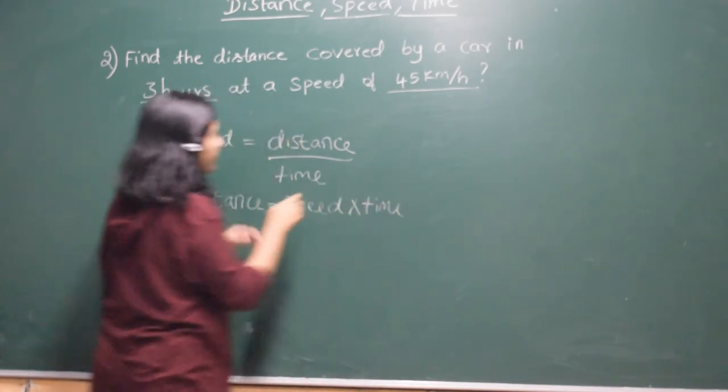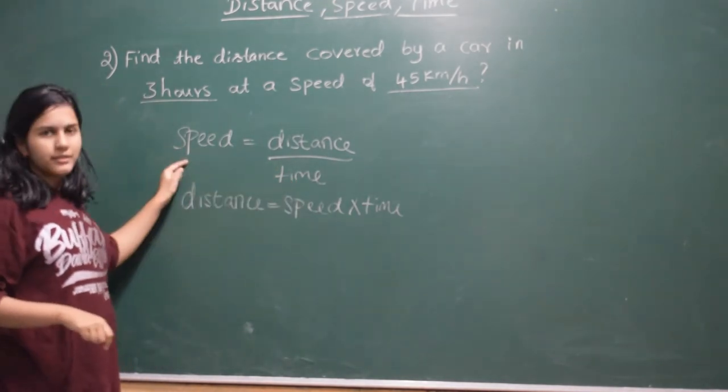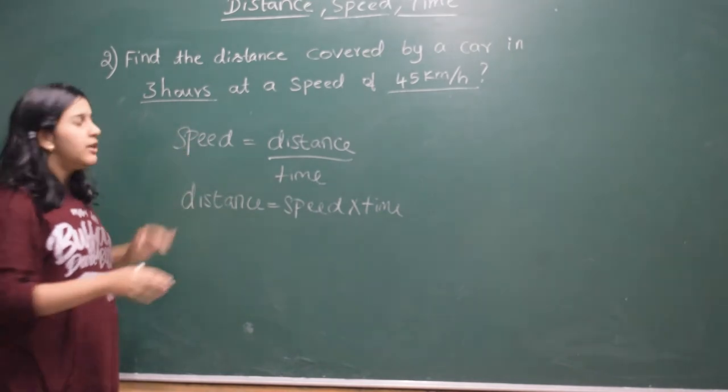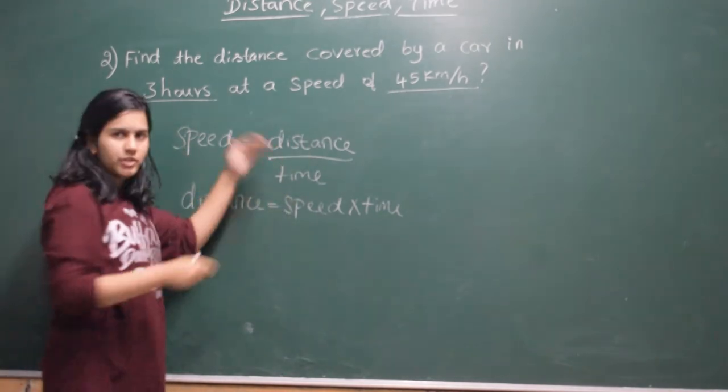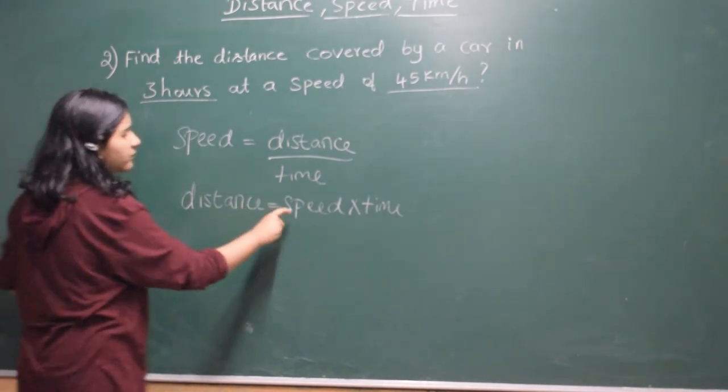So time is in the denominator on the right side. So when we take it to the other side, it will become numerator. So if it is in division form, it will become multiplication form. So distance will be equal to speed into time.